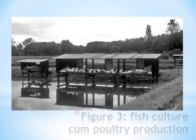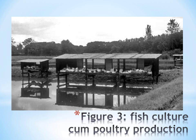This picture shows the culture of fish combined with poultry production. The poultry pen is situated above the fish pond, and the droppings from the poultry are expected to get into the pond and fertilize it in order to produce food for the fish. This is a system of integrated farming that helps to maximize resources.